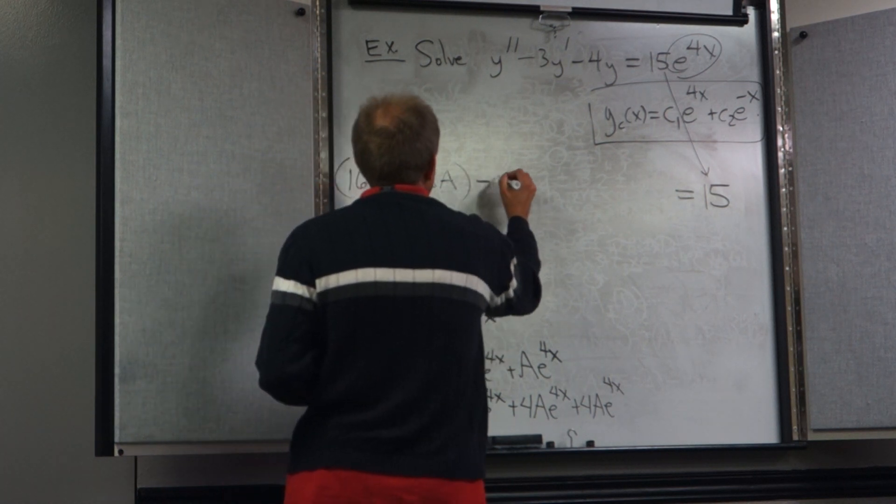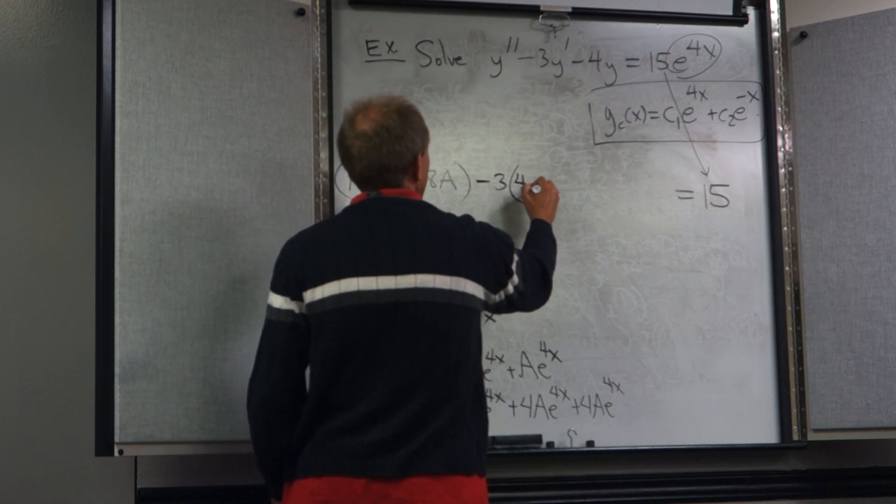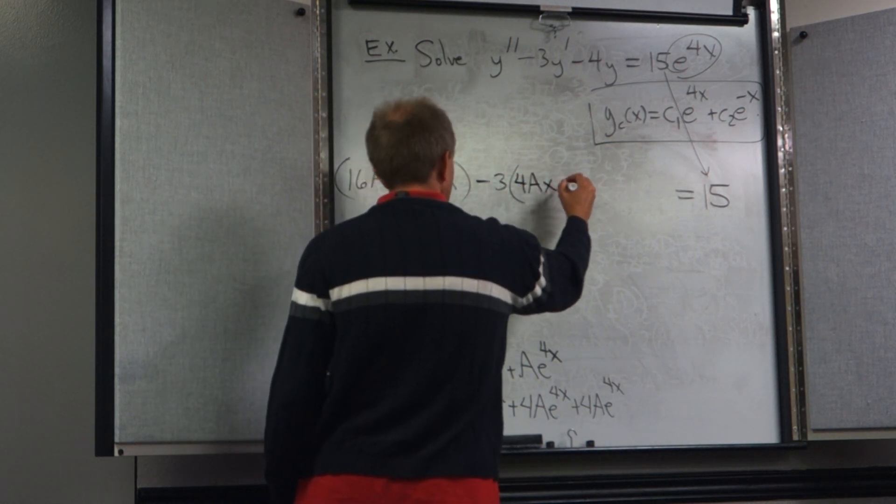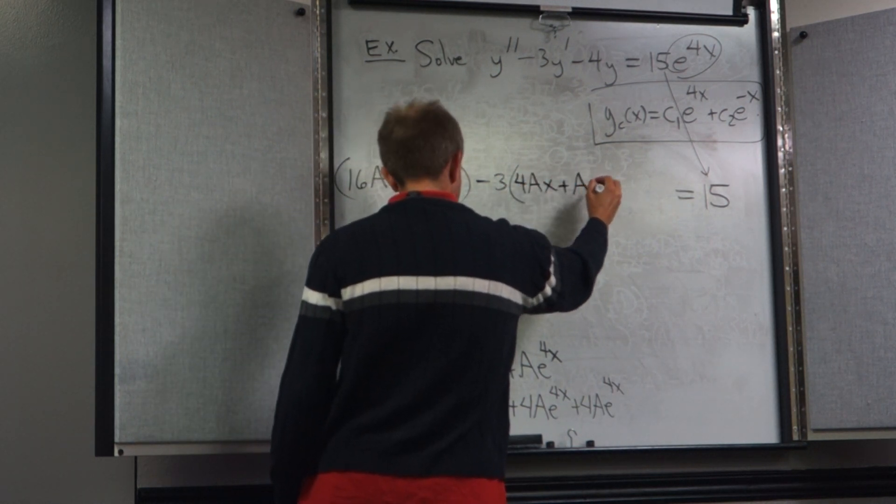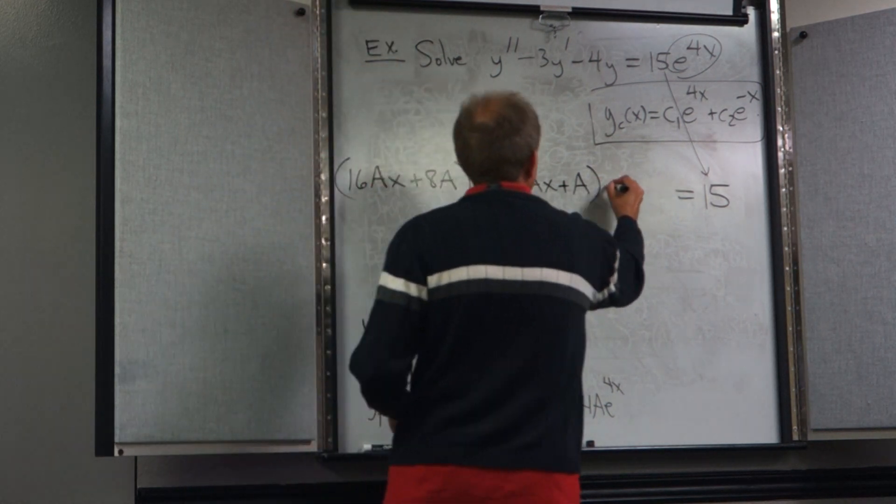to the 4x again. And then minus 3 times the first derivative, which is 4ax plus a. And then minus 4ax.